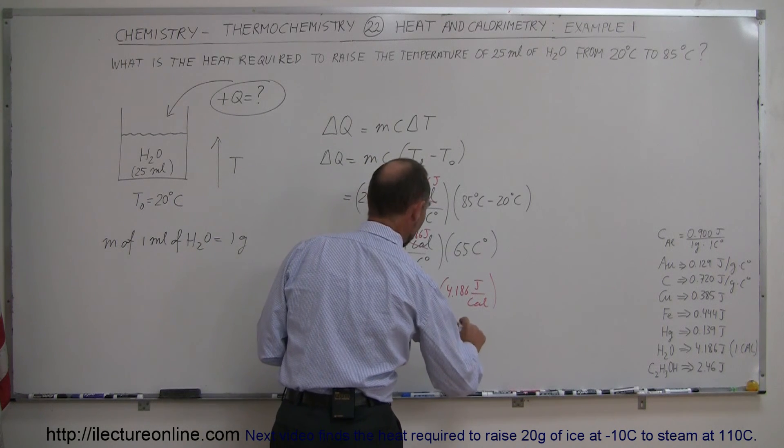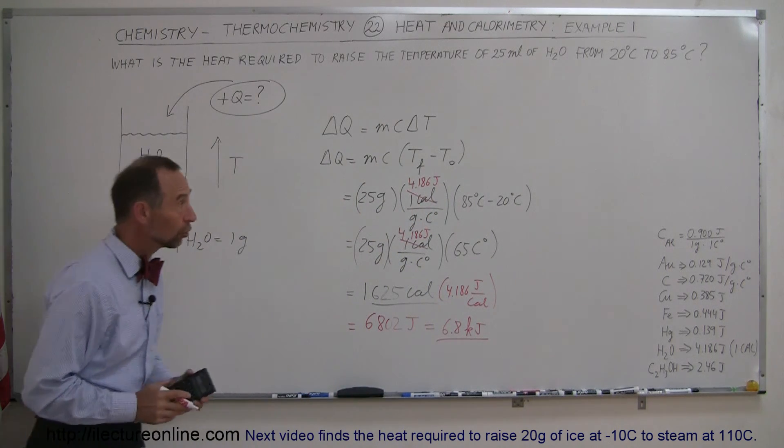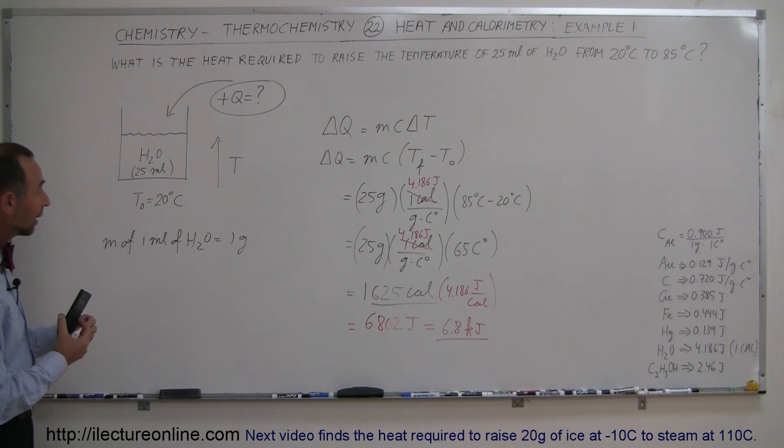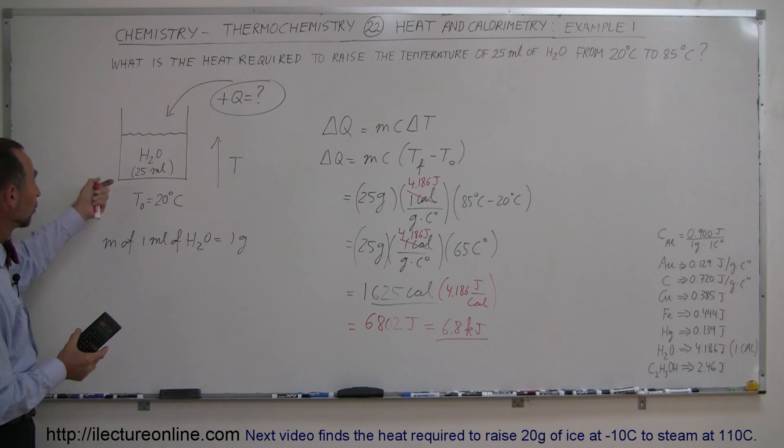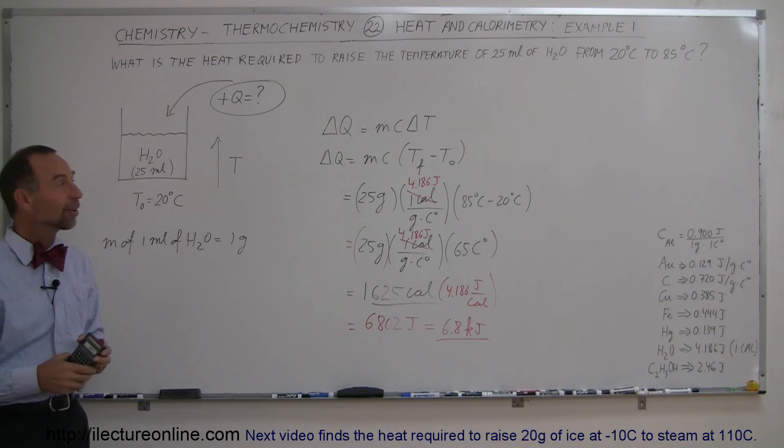Which, of course, would be 6.8 kilojoules. So sometimes instead of joules, we write kilojoules. So there's a nice, easy example where you can see how we can calculate the amount of heat required to raise the temperature of a substance, a certain amount of substance, by a certain number of degrees. So fairly straightforward. And that's how you do that.